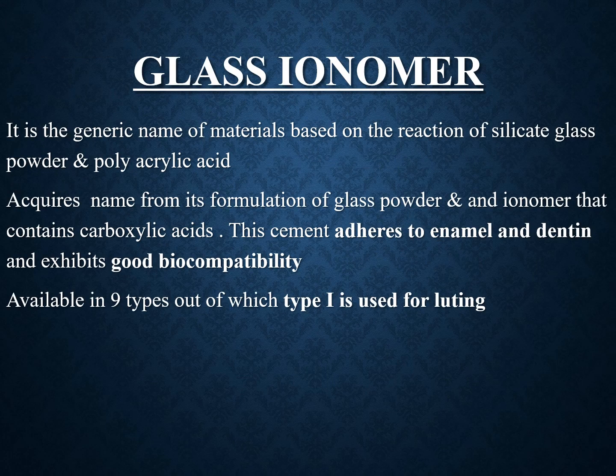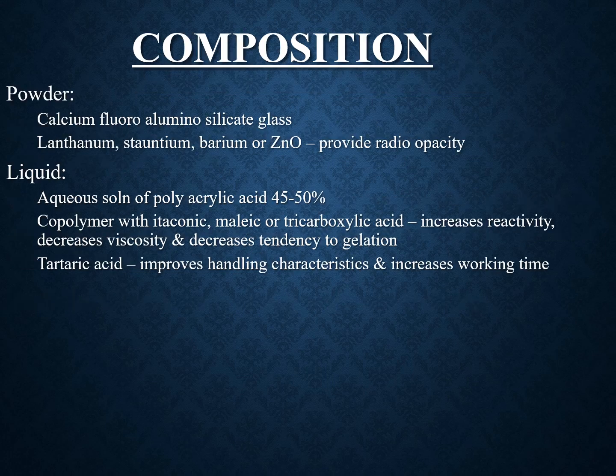Glass ionomer cement is widely used. It is a generic name for a material based on the reaction of silicate glass powder and polyacrylic acid — the name comes from the glass powder and ionomer containing carboxylic acid. It adheres to enamel and dentine and exhibits good biocompatibility. It is available in 9 types, of which Type 1 is the luting type. The powder is calcium fluoroaluminosilicate glass, with other ingredients including strontium, barium, xenon, and lanthanum, which provide radiopacity.